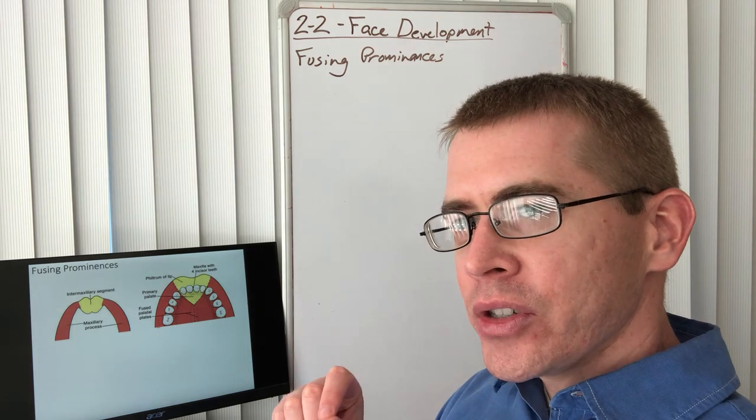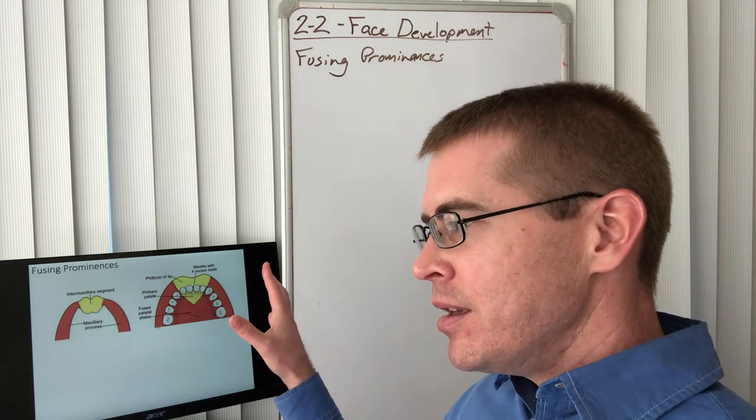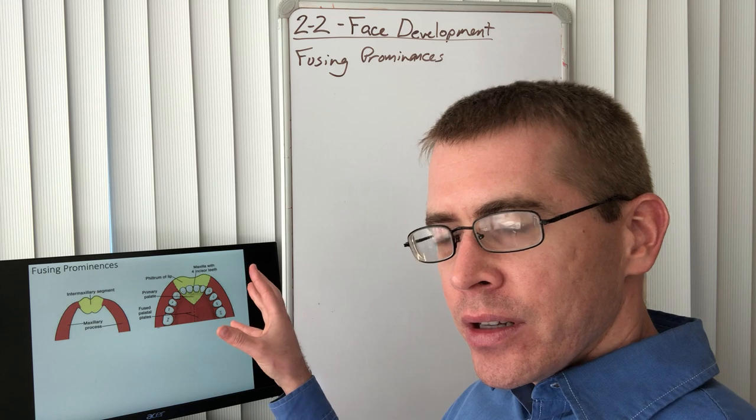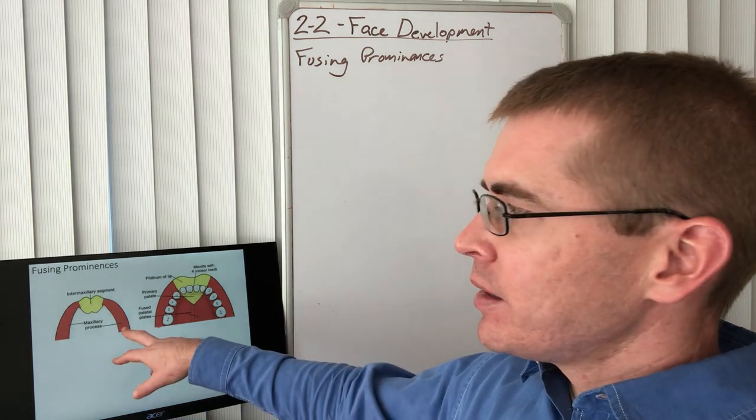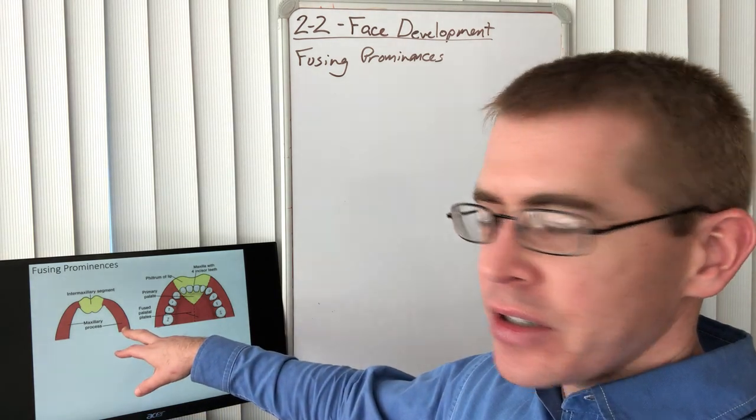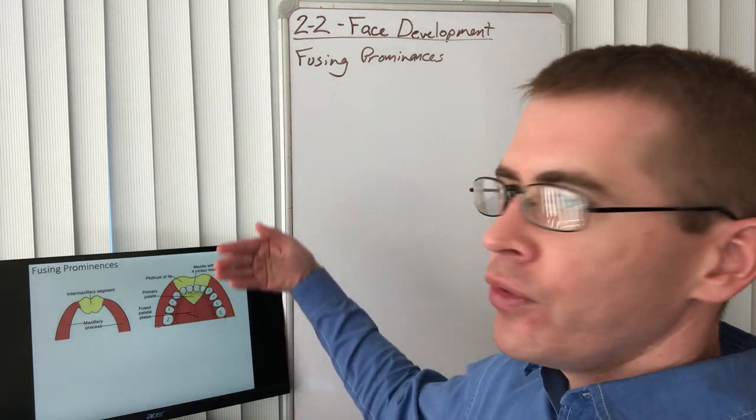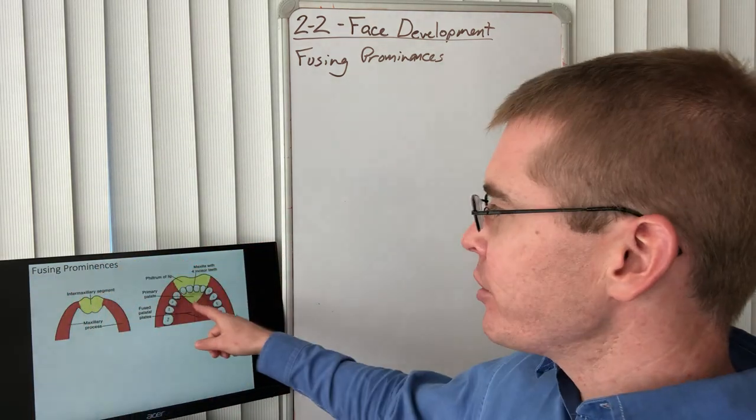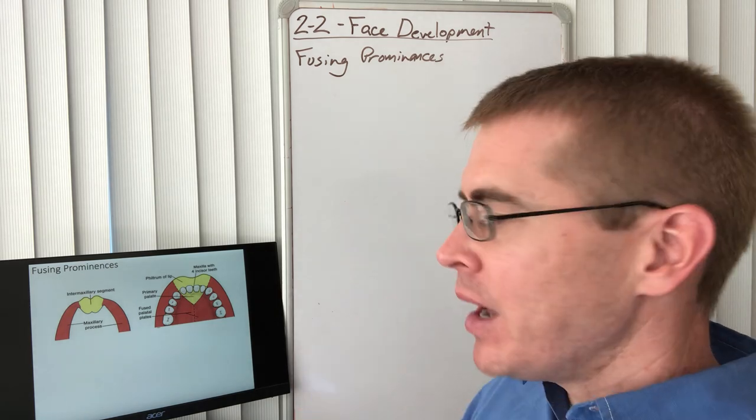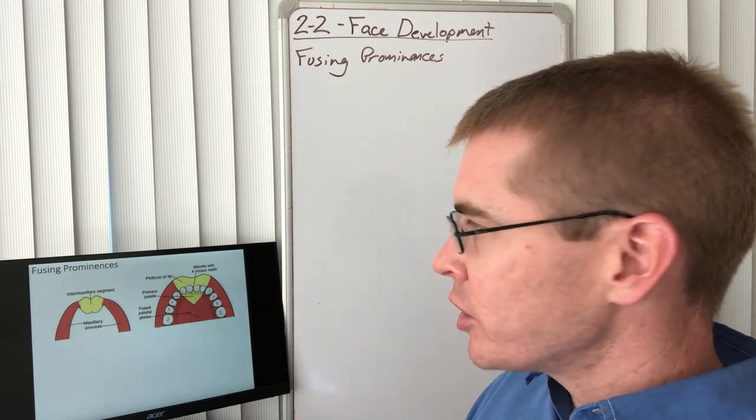Also, these prominences have impacts on the palate. The maxillary prominences or processes here are going to fuse in the midline, come together to fuse the palate so that the palate is one complete structure.